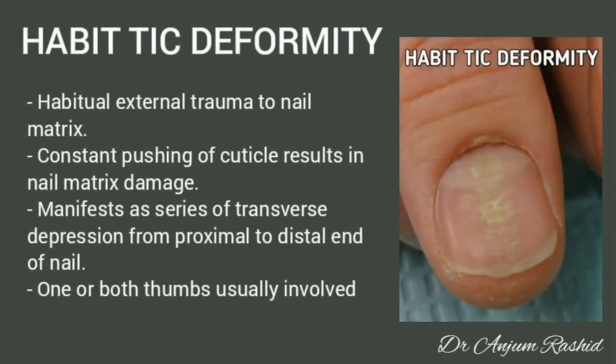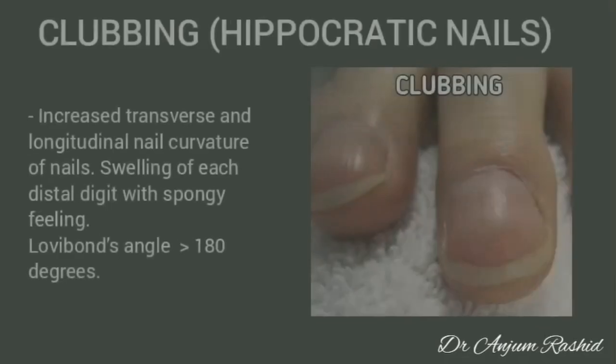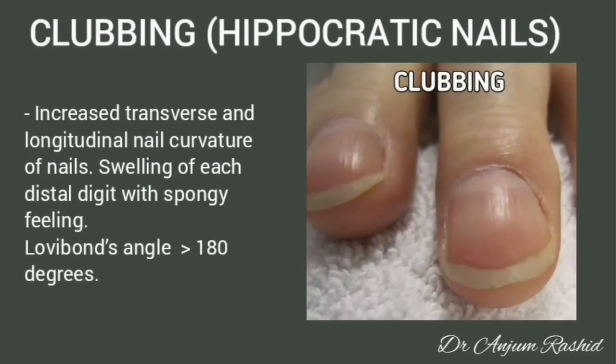Habit-tic deformity: it is the habitual external trauma to the nail matrix. Constant pushing of the cuticle results in nail matrix damage. It manifests as a series of transverse depressions from the proximal to the distal end of the nail. One or both thumbs are usually involved.